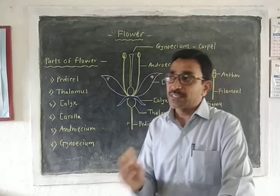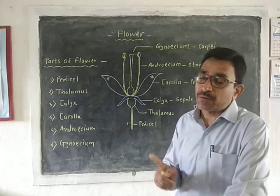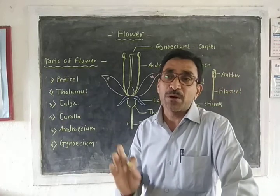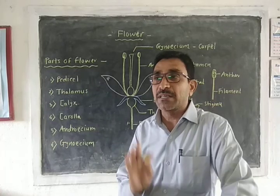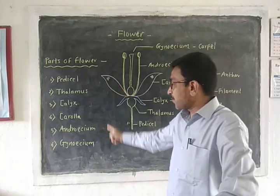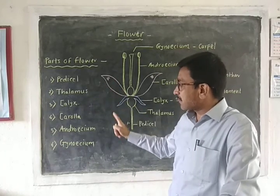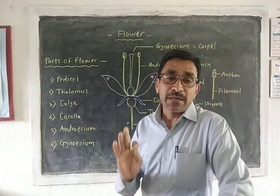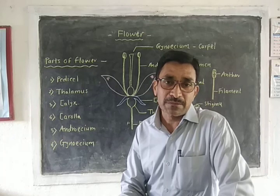So we studied about the flower and the typical parts of the flower. Flower is a highly condensed and modified shoot for the purpose of sexual reproduction. The typical parts of flower are six: pedicel, thalamus, calyx, corolla, androecium, and gynoecium. Thank you.